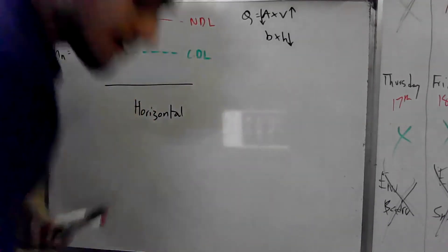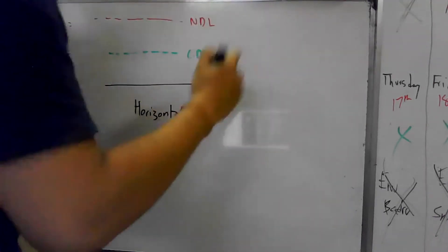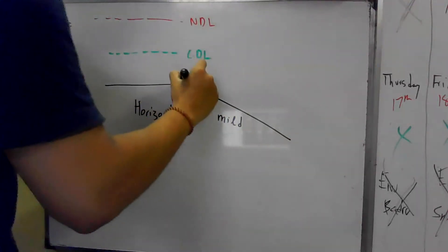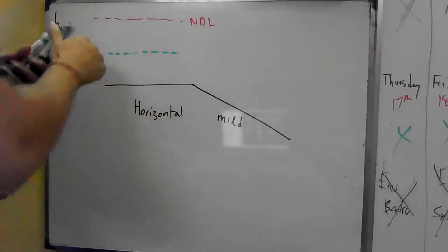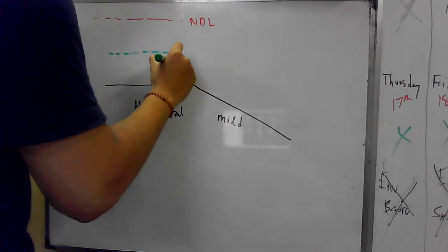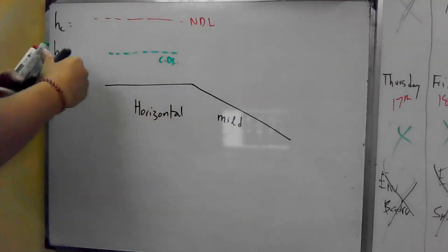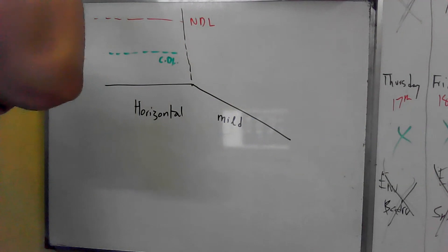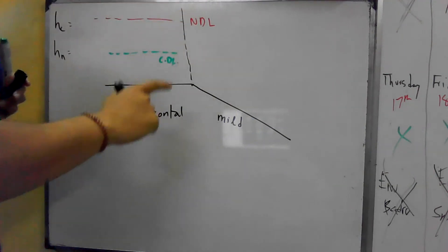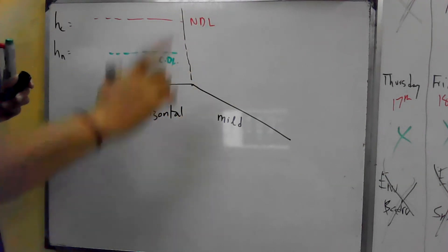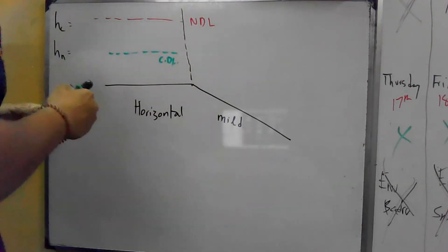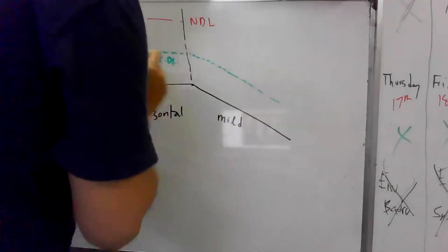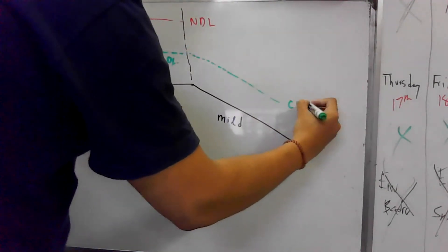The next step is in the horizontal. There is a rule that CDL doesn't change. Do you remember the rule that CDL doesn't change? I am going to determine HC. HC determination — there is no relationship with slope. CDL remains at the same point regardless of slope change. Is that okay?